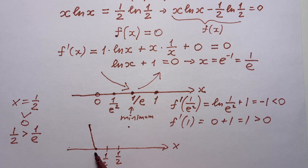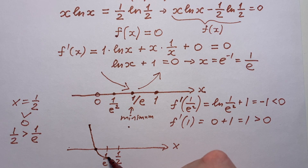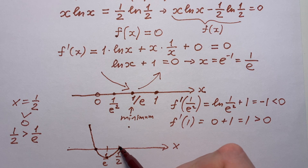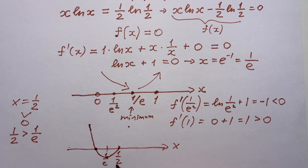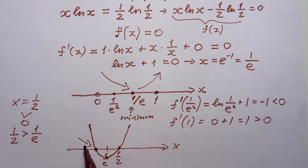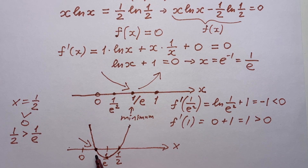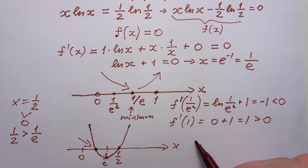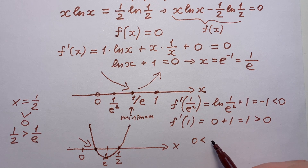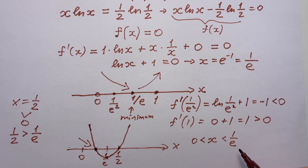Then we have some intersection point to the left of the minimum, then the function goes to the minimum at one divided by e, then after the minimum it increases and reaches the intersection point one divided by two that we already found. We have the solution one divided by two, and a second solution exists here. The second solution is bigger than zero and less than one divided by e.